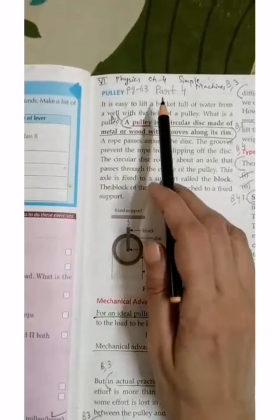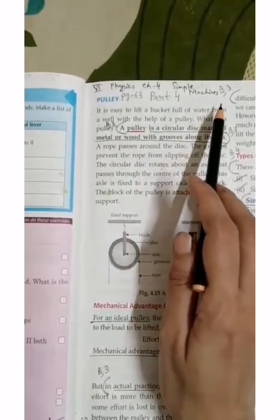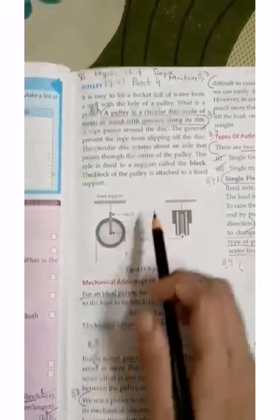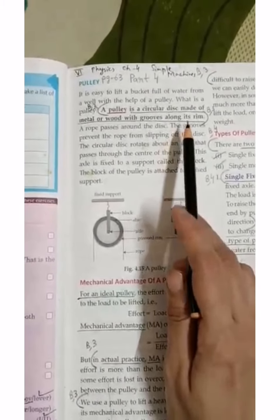Assalamualaikum. Today we will study Class 6 Physics, Chapter 4: Simple Machines, Part 4, Page 63 - Pulley. What is a pulley? A pulley is a circular disc made of metal and wood with grooves along its rim.